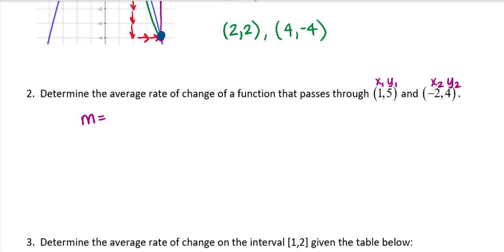Then here I go. The change in output. So y sub 2, which is 4, minus my y sub 1, which is 5. And I put the parentheses there just in case. And then divided by, here's my x sub 2, which is negative 2, minus my x sub 1, which is 1. So 4 minus 5 is negative 1. Negative 2 minus 1 is negative 3. So I do get a slope of 1 third.